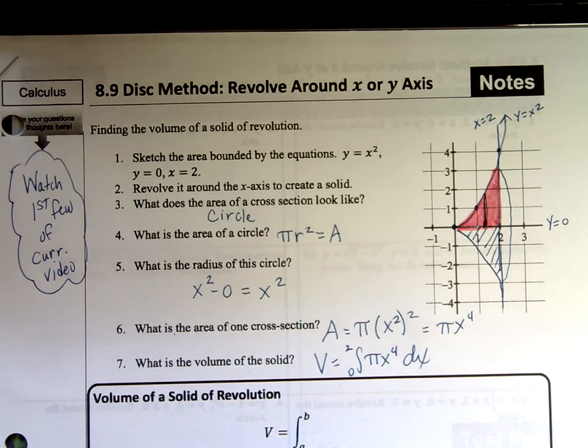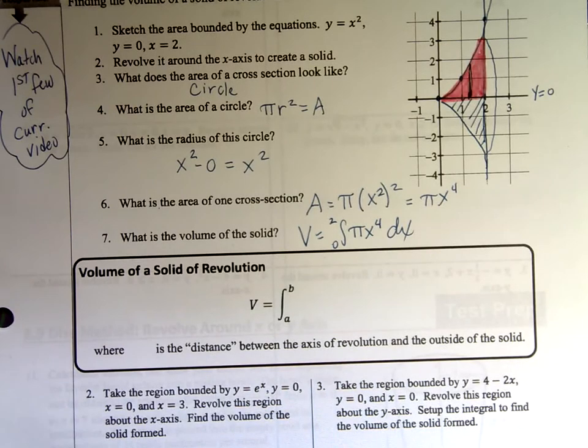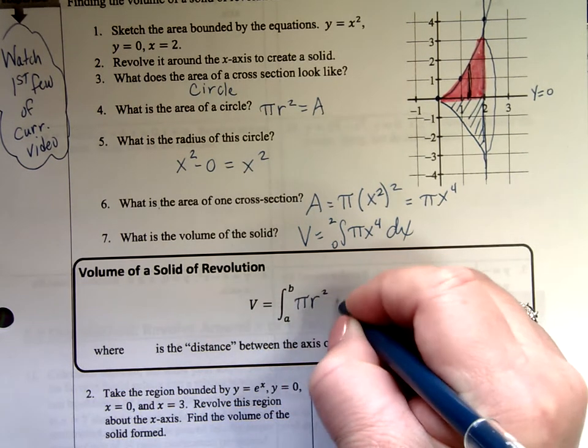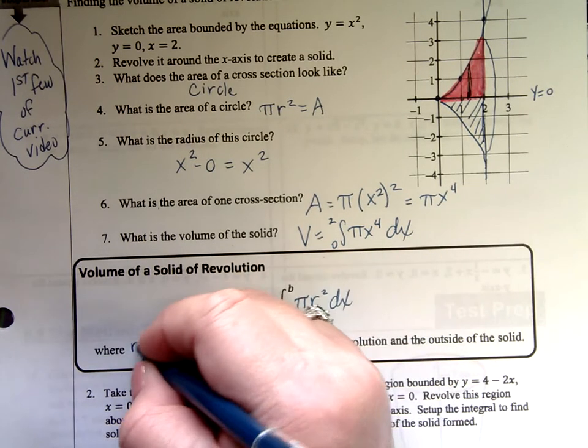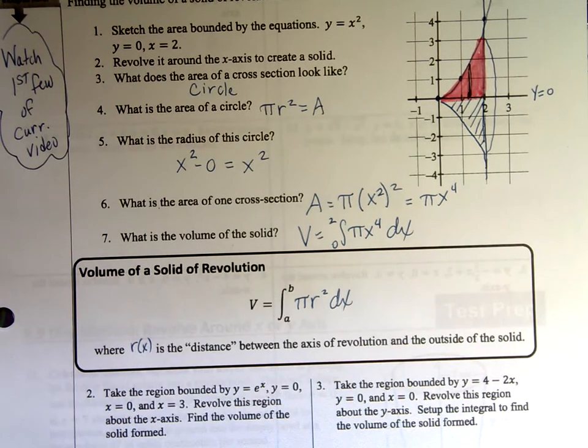So for any solid of revolution that is like this, it's a disk when you get to it. That is going to be pi r squared, where r of x is the distance between the axis of revolution and the outside solid. It's your radius.